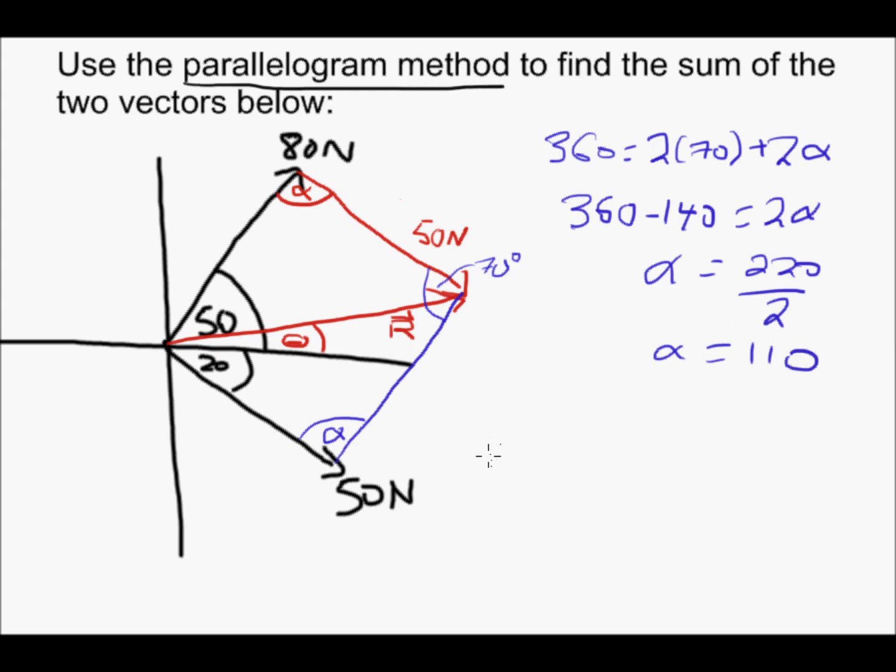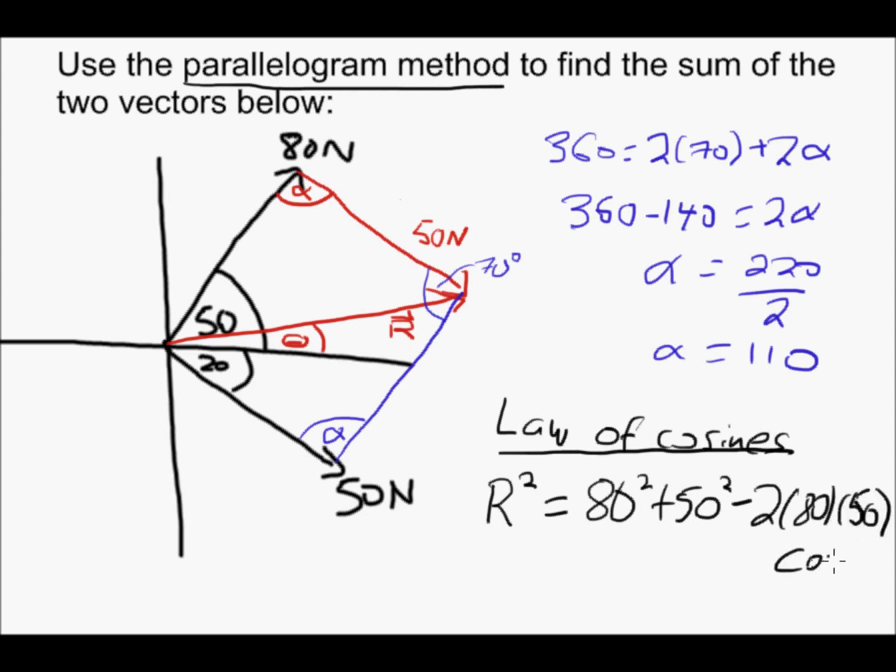Now, I need to use the law of cosines. Law of cosines, or the cosine law as it's sometimes called. So that's going to tell me that if I take r squared, put it on this side, that is equal to the squared of the other two sides. So this side here is 80 and this one is 50, so that will be 80 squared plus 50 squared minus 2 times 80 times 50 times cosines of the angle opposite r.